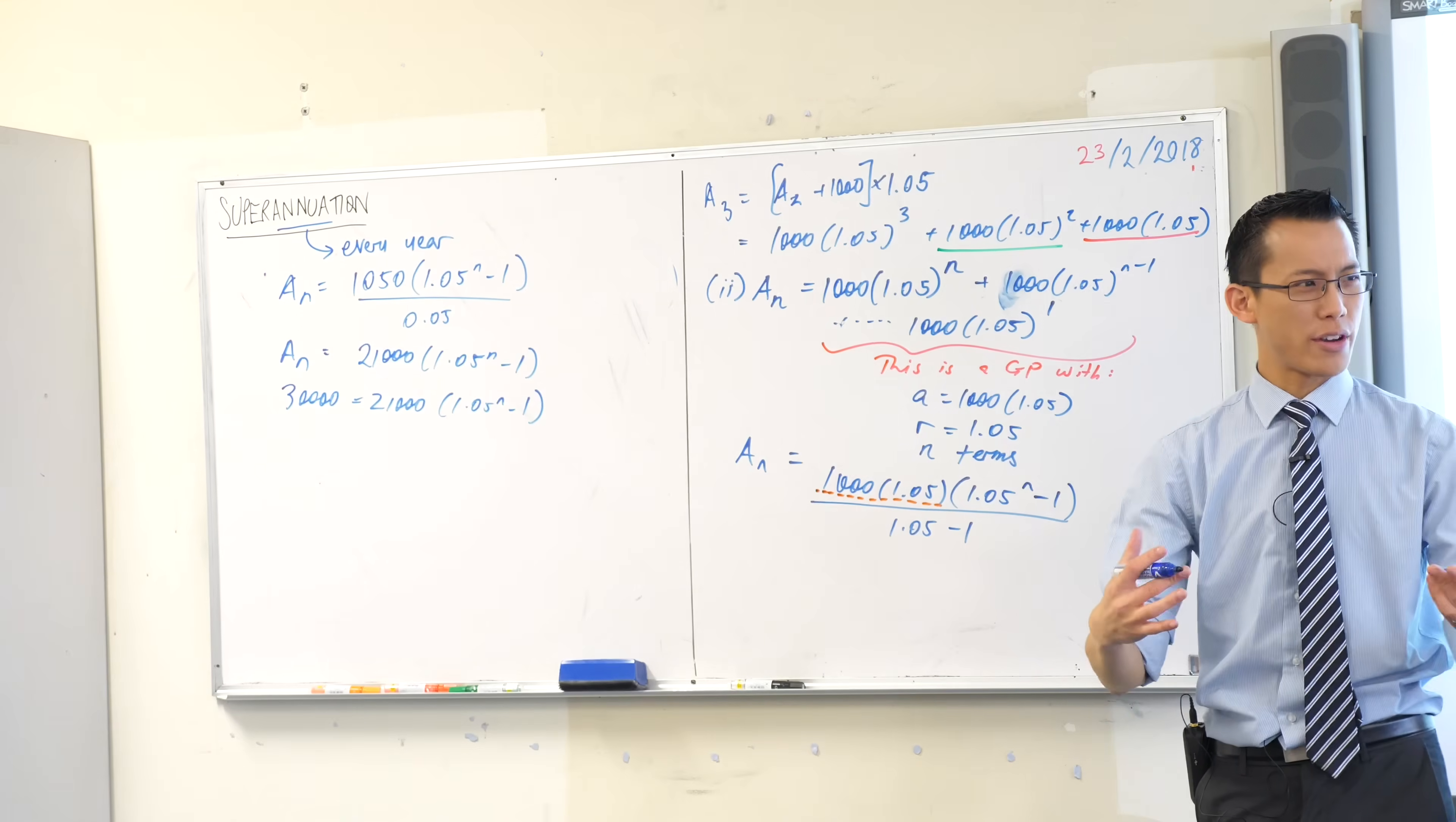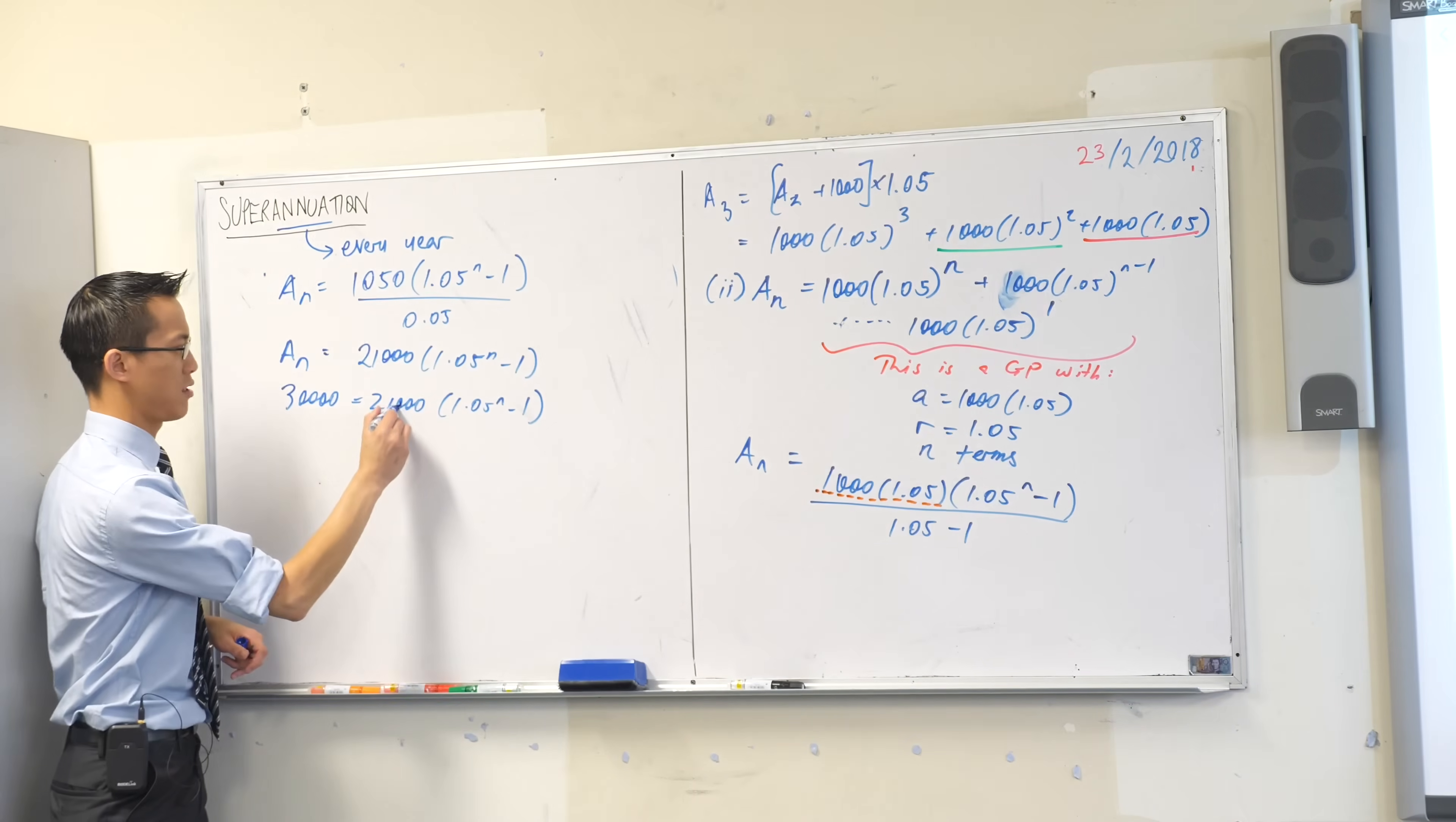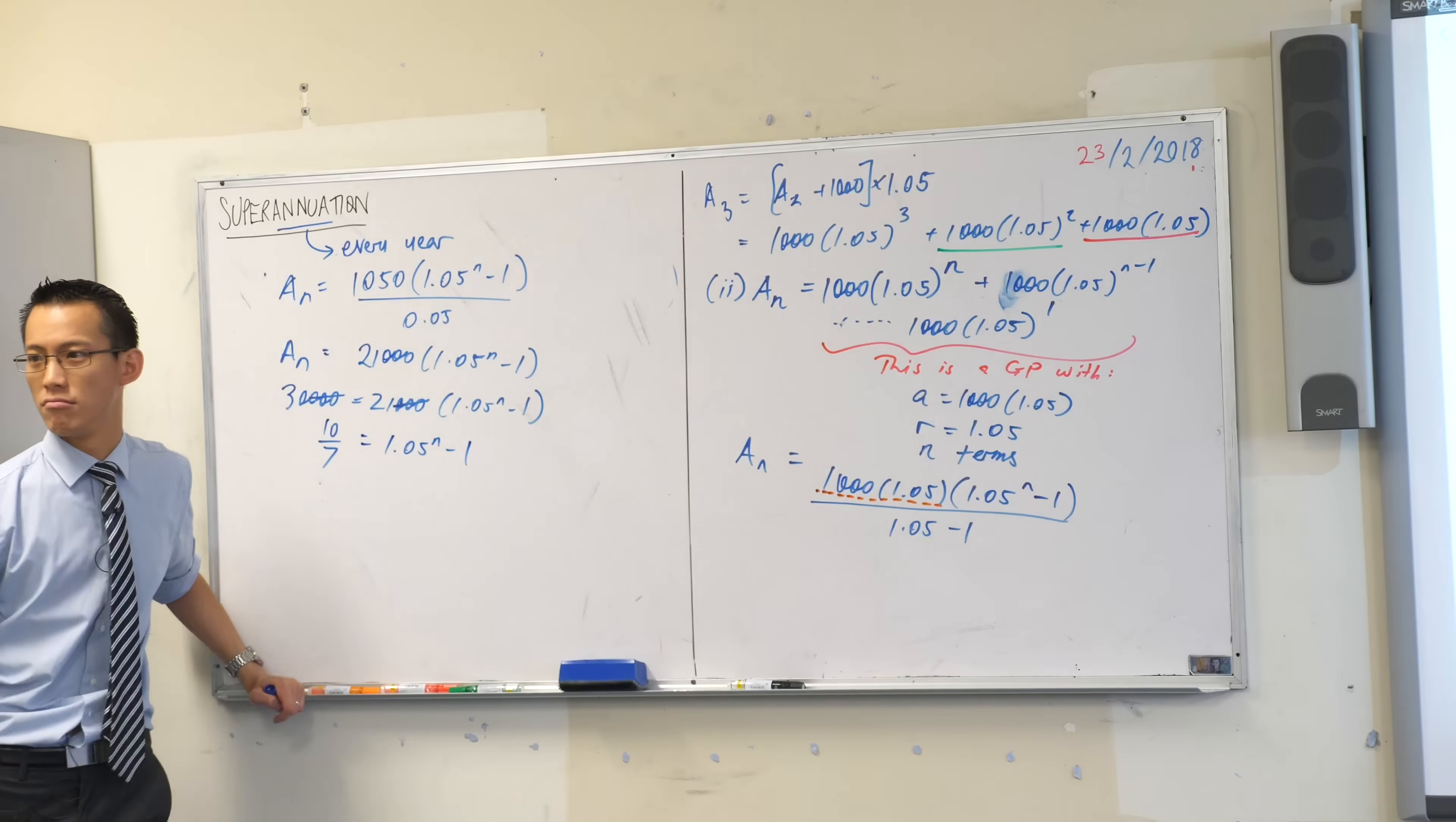And now I'm trying to solve. What am I trying to solve for? I'm just solving for n. Thankfully, because of all this work that I've done, it's the only pronumeral left. So I'm just going to rearrange until I get to that point. Let's see here. Let's tidy this up a little bit. Cancel, cancel. 30 on 21 is 10 on 7. Equals this. Is my arithmetic okay?